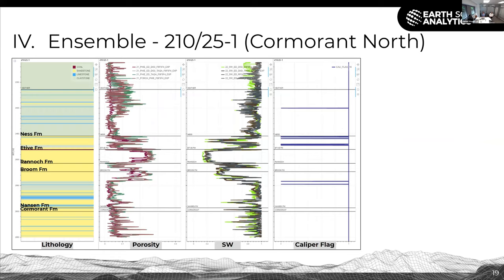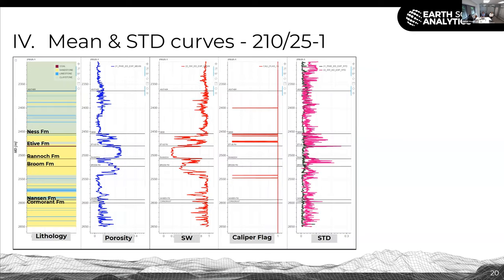This diagram shows the ensemble curves that we get for each well. For each well we get four curves, and these curves are stacked upon each other — four curves for water saturation and four curves for porosity. We basically form the means of those curves and calculate the standard deviation. This is our end product.